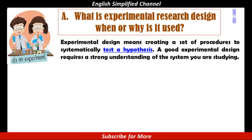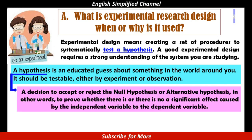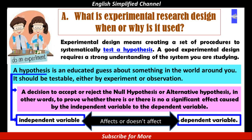Experimental design means creating a set of procedures to systematically test a hypothesis. A good experimental design requires a strong understanding of the system you are studying. A hypothesis is an educated guess about something in the world around you — it should be testable, either by experiment or observation. It is a decision to accept or reject the null hypothesis or alternative hypothesis; in other words, to prove whether there is or there is no significant effect caused by the independent variable on the dependent variable. By testing the hypothesis, we come to a conclusion of which variable is accepted or rejected.